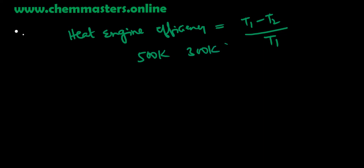The next question is on heat engine efficiency. We already have given questions on our community section of ChemMasters official YouTube channel on heat engines, refrigerators, and Carnot cycles. For the heat engine, the efficiency is given as (T1 - T2) / T1. The temperature values given are 500 Kelvin and 300 Kelvin in GATE 2021 Chemistry examination. By substituting them, we can get the heat engine efficiency.